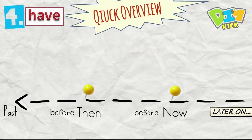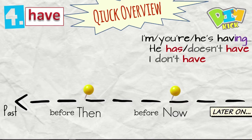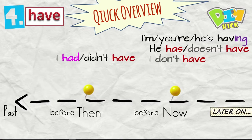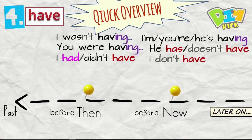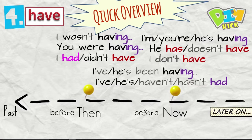Have. Quick overview. He has or he doesn't have. I have or I don't have. I'm having. You're having. He's having. I had or I didn't have. I wasn't having. You were having. I've had. He's had. Or the negative again. I haven't had. He hasn't had. Alright, then we have I've been having or he's been having. And I'd or I hadn't had. I'd been having.